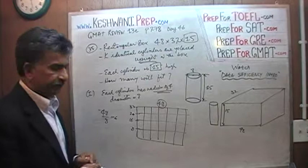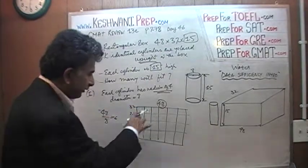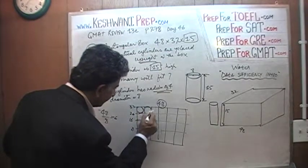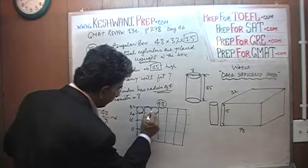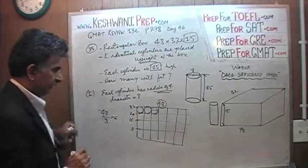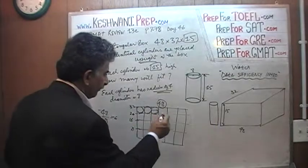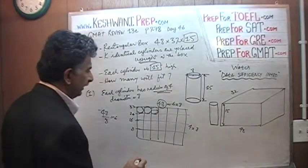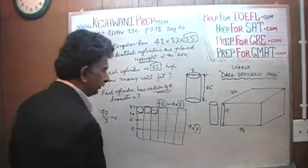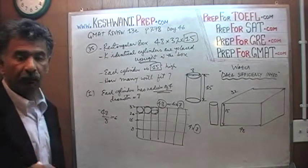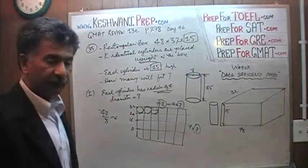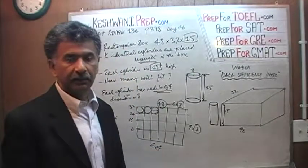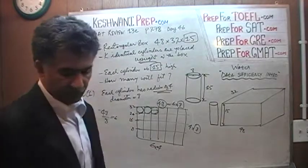Think of this as looking at the box from the top — the top view. There are cylinders sitting in there, fitting in perfectly. Since this side is 6 times 8 and the other is 4 times 8, with 8 being the diameter, we will have 6 rows and 4 columns — or 4 rows and 6 columns. Either way, 6 times 4 gives us 24 cylinders. The first statement does the job beautifully.